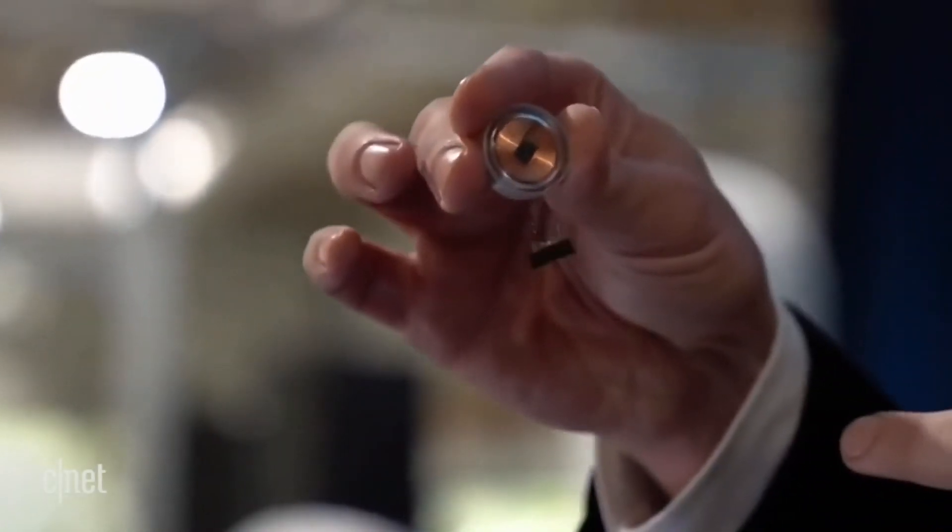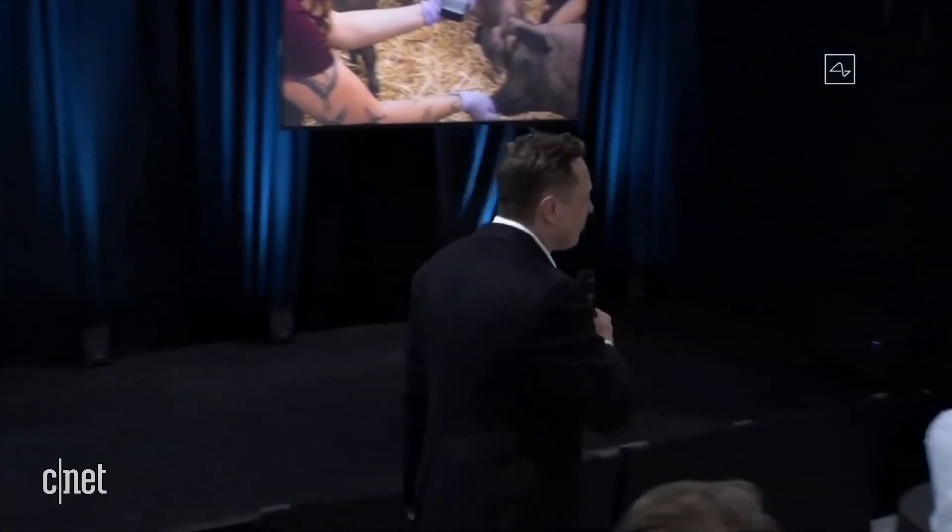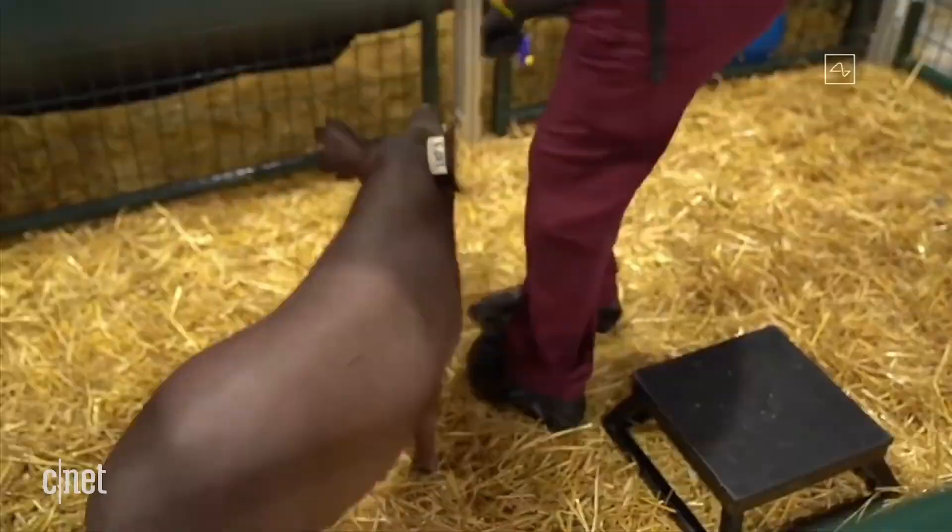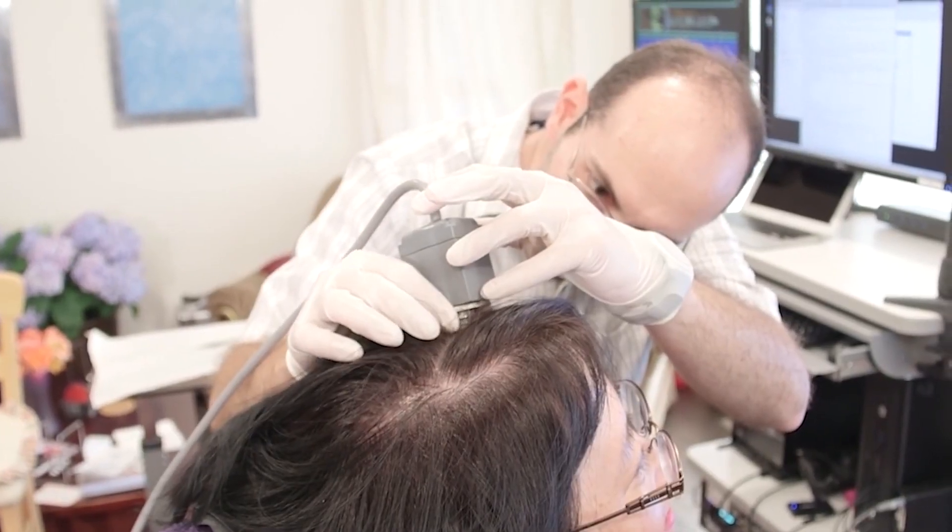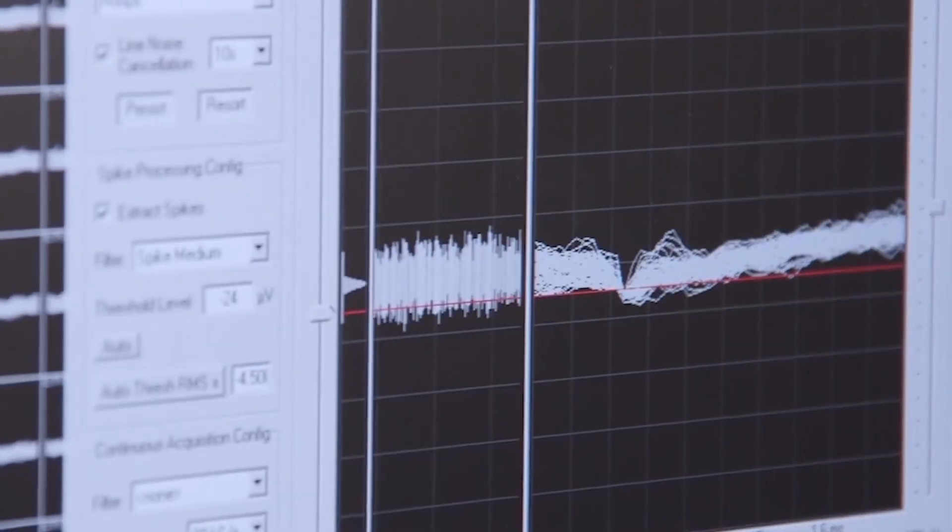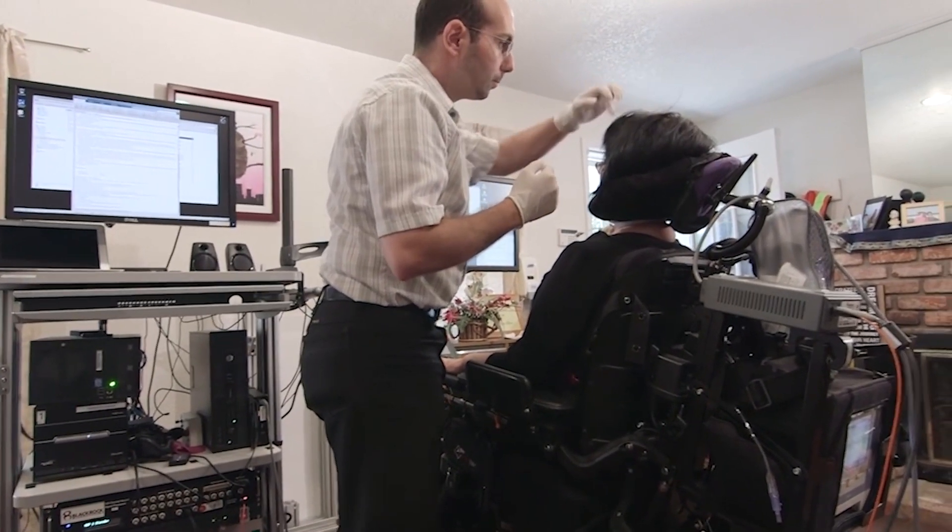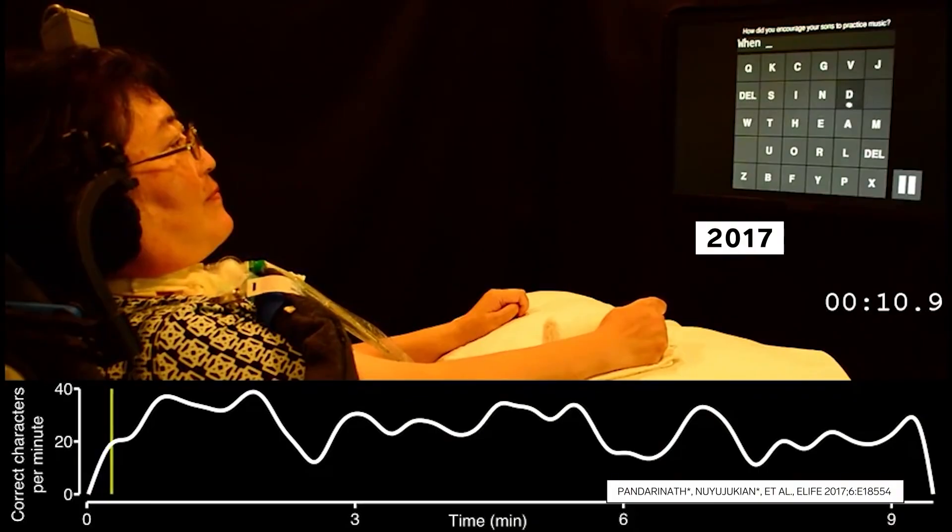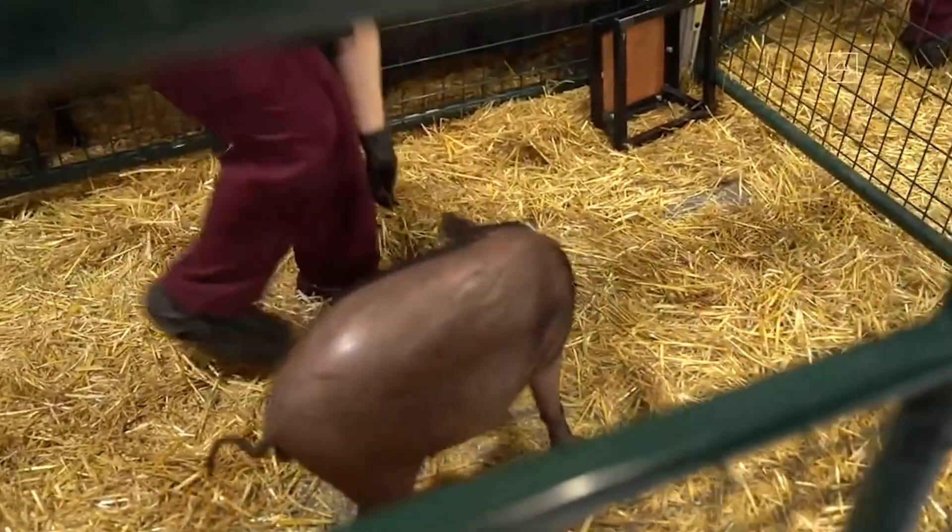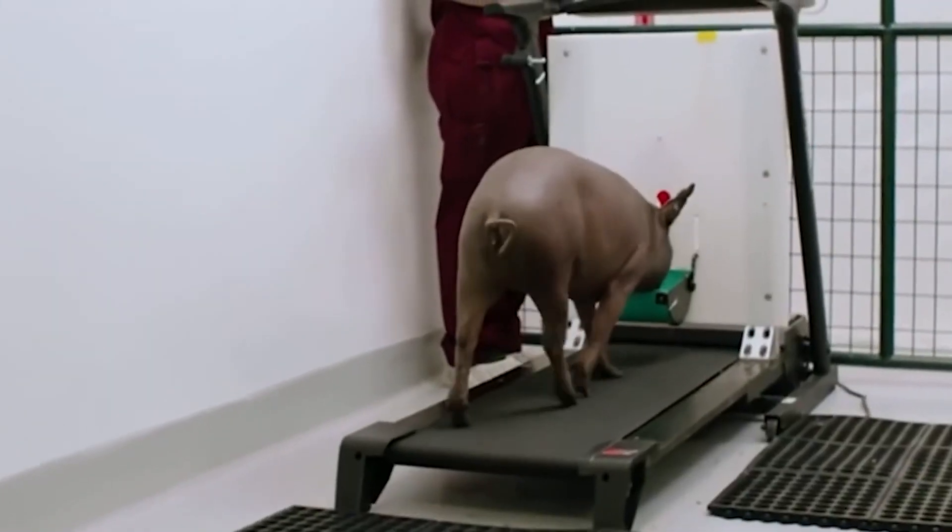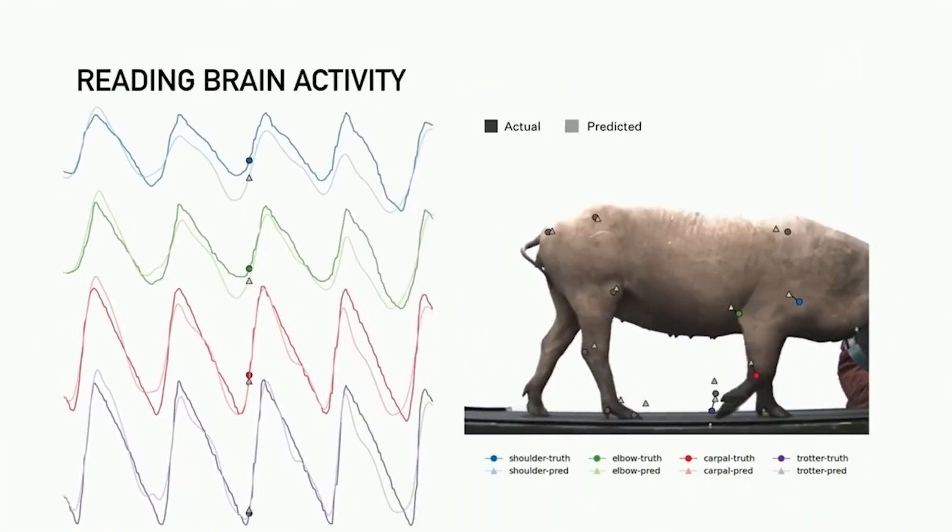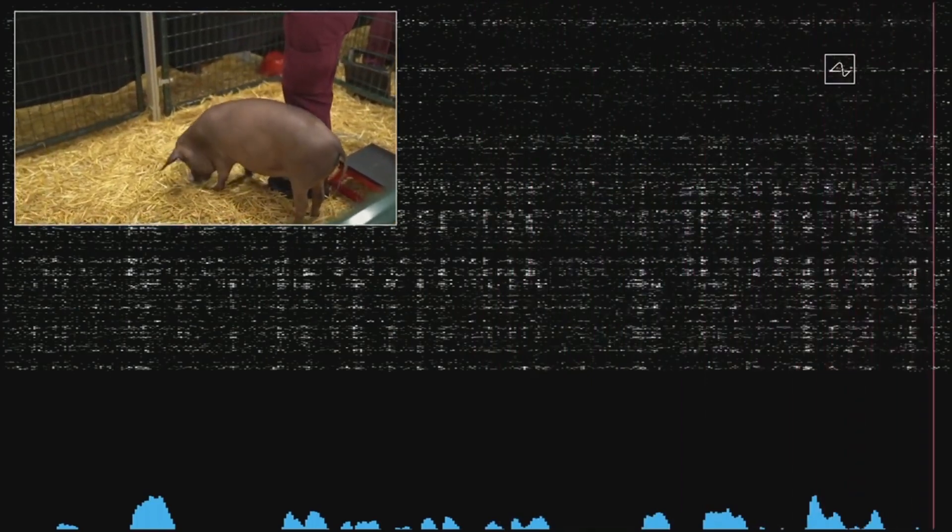While the potential benefits of Neuralink's technology are significant, ethical and safety concerns also need to be considered and addressed. For example, questions have been raised about the long-term effects of implantable devices on the brain, as well as potential privacy and security issues that may arise from having a direct connection between the brain and computer systems. Despite these challenges, Neuralink has made significant progress in its research and development and has demonstrated its technology in several public demonstrations.